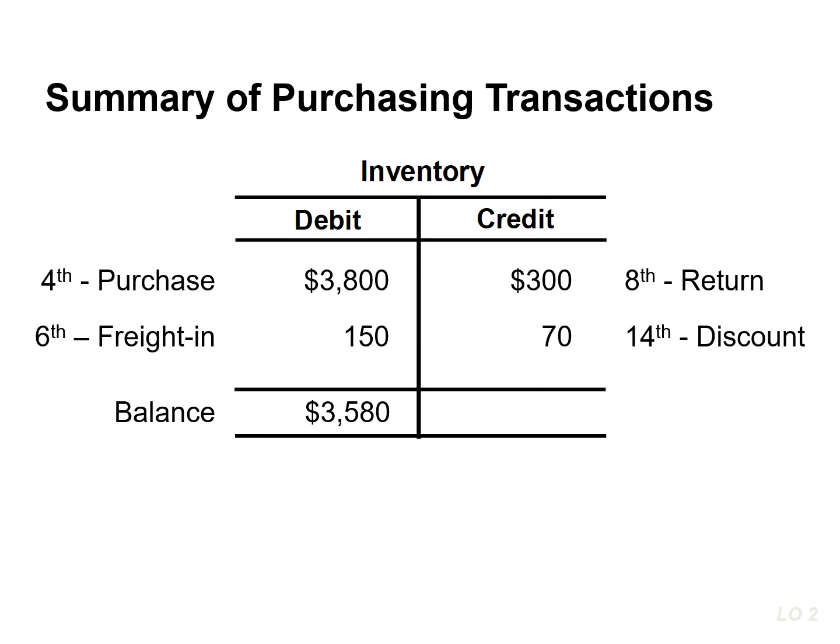The following T-account provides a summary of the effect of the previous transactions on inventory. Socks Stereo originally purchased $3,800 worth of inventory for resale. It then returned $300 of goods and paid $150 in freight cost. It also received a $70 discount off the balance owed because it paid within the discount period. This results in a balance in the inventory account of $3,580.